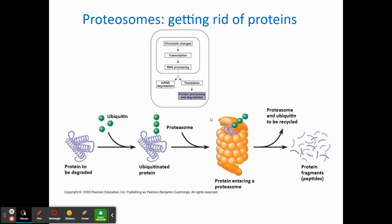Finally, what can happen to proteins once they have been made? They can be broken down. There is a signal molecule called ubiquitin — a small protein — that attaches to targeted proteins and helps direct them to something called a proteasome, which breaks up the polypeptide chain and releases short peptide fragments of two to five amino acids, which can then be reutilized somewhere in the cell. That is the lecture on eukaryotic gene control. Make sure to check your digital notes and chapter 18 in your textbook.